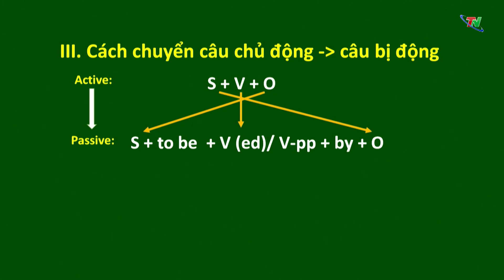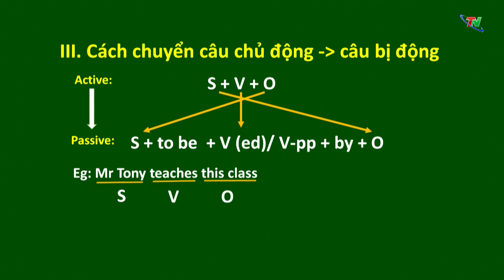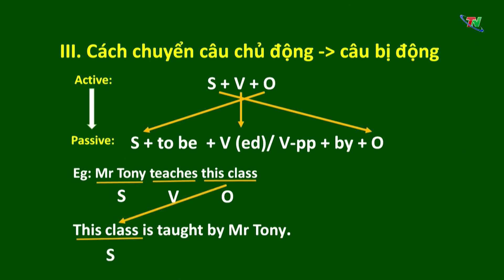Ví dụ: 'Mr. Tony teaches this class.' Ở đây Mr. Tony là chủ ngữ, động từ là 'teaches', tân ngữ là 'this class'. Chúng ta lấy tân ngữ 'this class' chuyển thành chủ ngữ của câu bị động. Động từ to be chia ở số ít, tương ứng với thì hiện tại đơn. Từ 'teaches' chuyển về quá khứ phân từ là 'taught'. Và chủ ngữ Mr. Tony chuyển thành tân ngữ của câu bị động. Vậy chúng ta có câu: 'This class is taught by Mr. Tony.' Khi chuyển từ câu chủ động sang câu bị động, chúng ta cần lưu ý: thứ nhất, đối với câu bị động có 2 tân ngữ, khi muốn nhấn mạnh vào tân ngữ nào, ta đưa tân ngữ đó lên làm chủ ngữ của câu bị động.